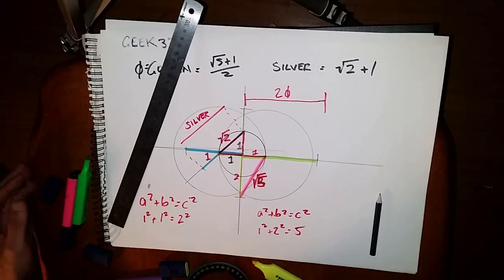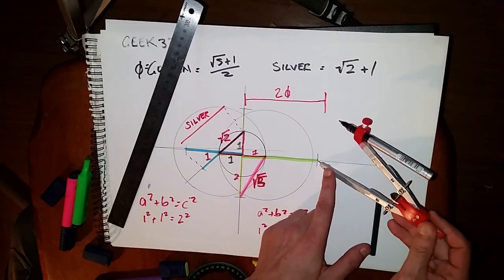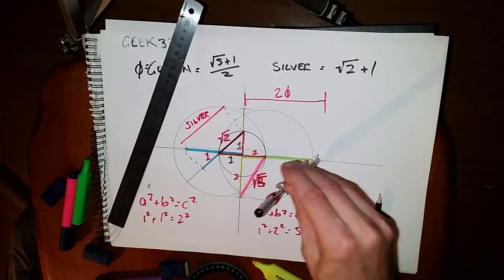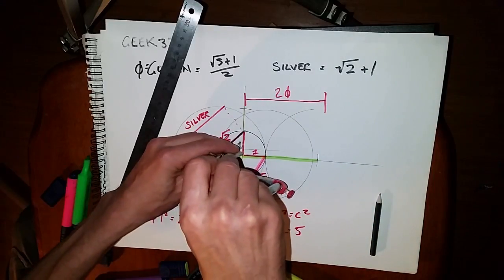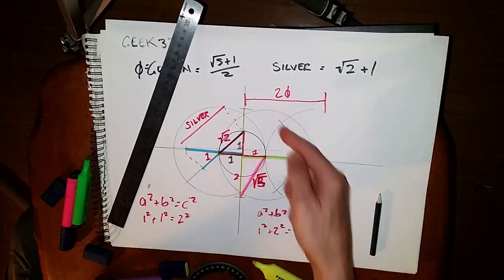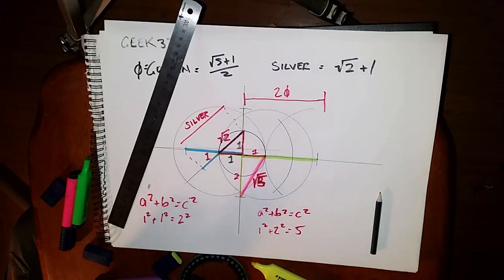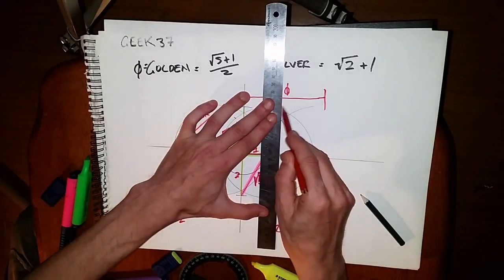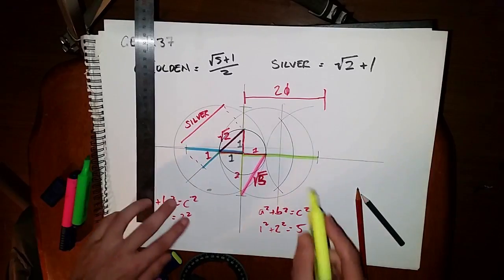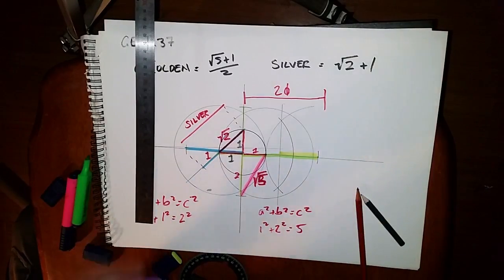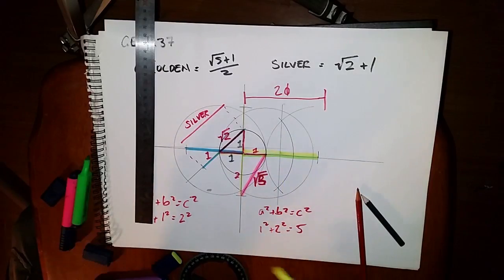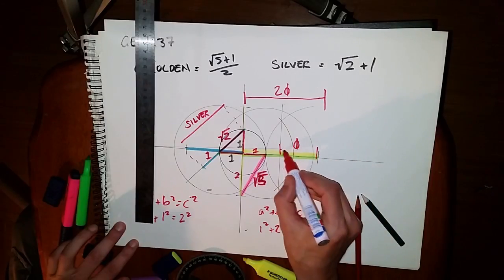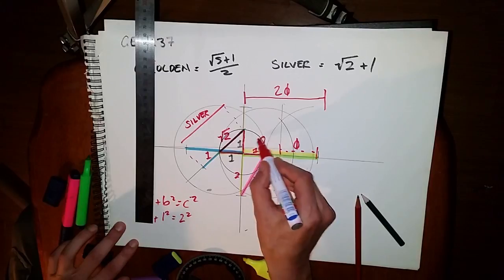And now all we need to find phi, all we need to do is bisect the line. So just set your compass to, as long as it's over half it doesn't matter, you can eyeball that easy. And we do it again here. We've now bisected it, we've cut that line in two, and therefore we now have phi, and also here we will have phi.